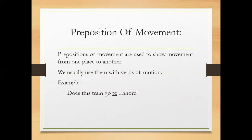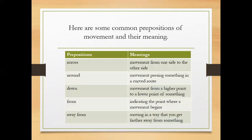It is telling where this train is going to. So here are some common prepositions of movement and their meanings. Let's see the first one: 'across' - it means movement from one side to the other side. And if you see it in a sentence, we can use it like this: it took us three days to drive across the desert.